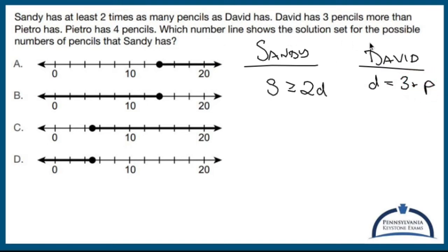Which number line shows the solution set for the possible numbers of pencils that Sandy has. Okay. Well, Sandy is greater than two times D, which is three plus P.